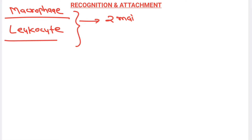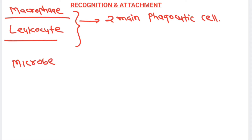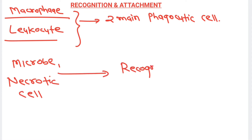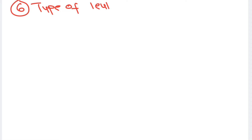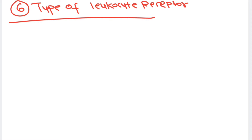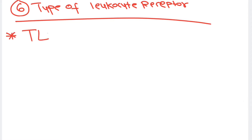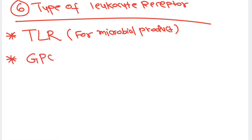Macrophages and neutrophils are the two main phagocytic cells. Whenever microbes or necrotic cells are present in our body, they will be recognized by leukocyte receptors, as macrophages and neutrophils have corresponding receptors for recognition of microbes or foreign particles. There are six types of such recognition receptors on leukocytes. The first receptor that recognizes the microbe is the toll-like receptor (TLR).